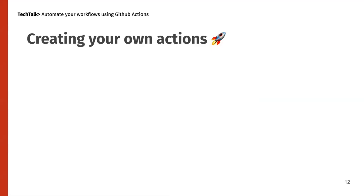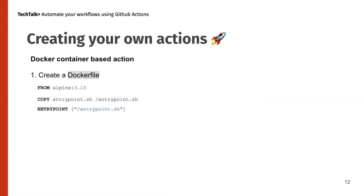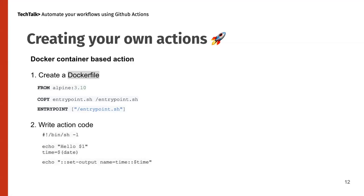Next is creating your own actions. As I explained earlier, there are various types: Docker-based and JavaScript-based actions. This is a hello world example from the documentation. To create a Docker container-based action, you create a Dockerfile and specify an entry point — a script that runs when the container starts. You write your action logic in that script, and you can package any custom logic into a Docker container.